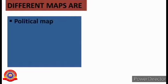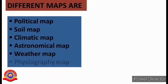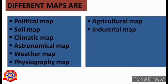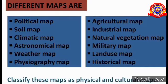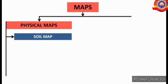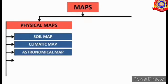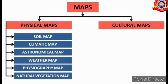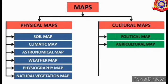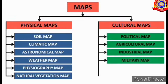There is an activity for you: classify the different types of maps as physical maps and cultural maps. The maps to classify are: political map, soil map, climatic map, astronomical map, weather map, physiography map, agricultural map, industrial map, natural vegetation map, military map, land use map, and historical map. Physical maps include: soil map, climatic map, astronomical map, weather map, physiography map, and natural vegetation map. Cultural maps include: political map, agricultural map, industrial map, military map, land use map, and historical map.